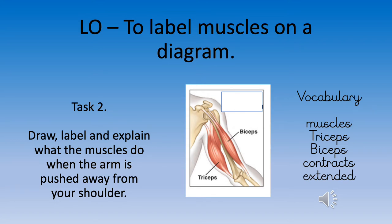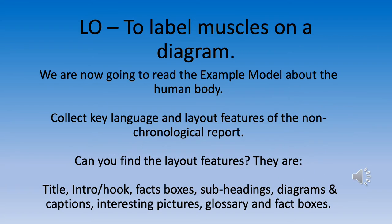Task two: draw, label and explain what the muscles do when the arm is pushed away from the shoulder. Remember to use the vocabulary: the tricep is the muscle underneath the arm at the back, the bicep is the muscle on top in front of your arm. When a muscle contracts it will bulge, and when it extends it will be flatter.